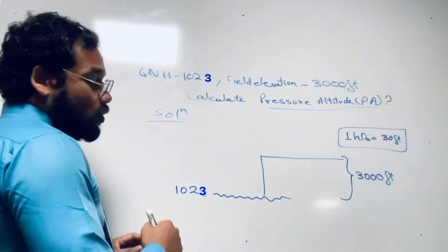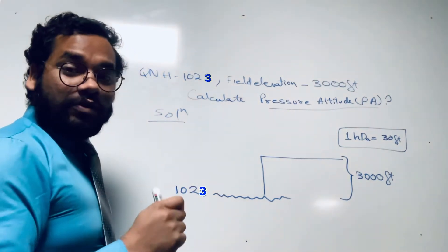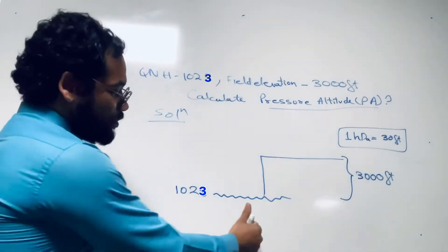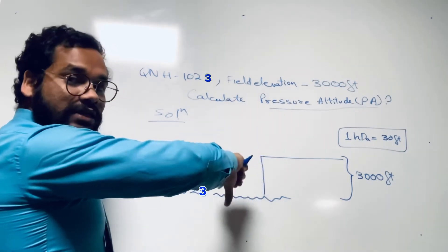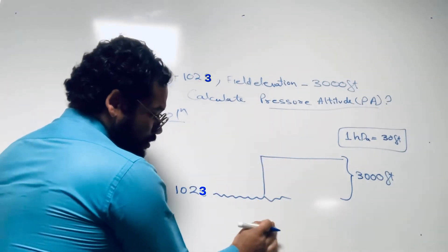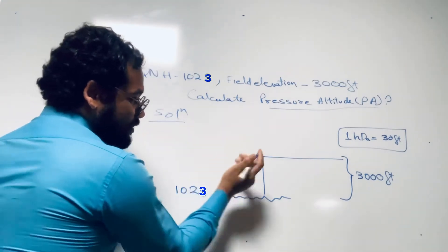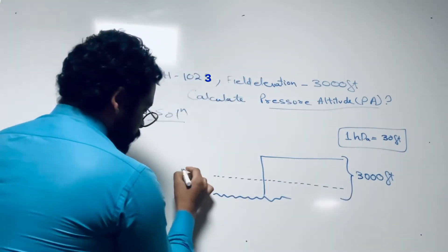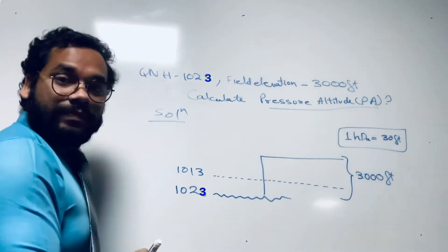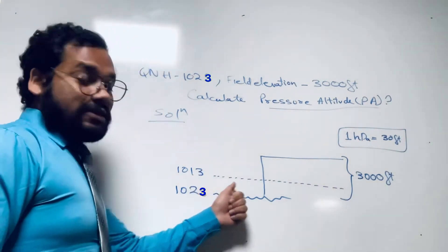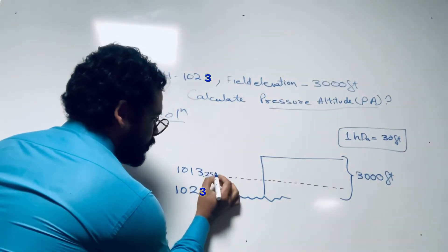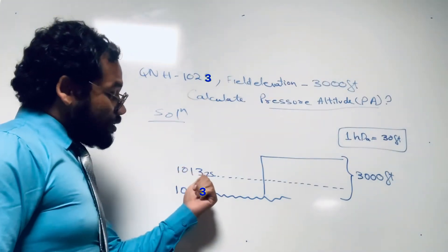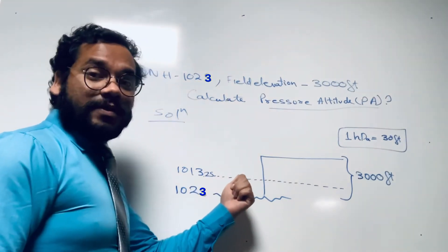Now the question is whether 1013 will be above or below the field. Remember: as altitude increases, pressure decreases. So here altitude is increasing, meaning pressure will be decreasing. That means 1013 will not come below 1023 — it will come above it. So here we have 1013.25 hectopascals as the standard pressure at sea level.